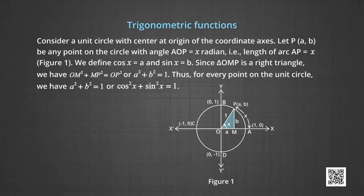Consider a unit circle with the center at the origin of the coordinate axis. Let P(A, B) be any point on the circle with angle AOP equal to x radians, that is, the length of arc AP is equal to x units. You can see this in figure 1. We define cos x as A and sin x as B. Since triangle OMP is a right triangle, we have OM² + MP² = OP², or A² + B² = 1.